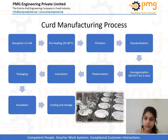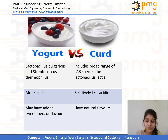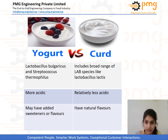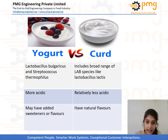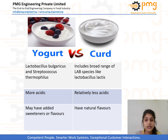Now let us understand the difference between curd and yogurt, two terms that are often confused. The processing steps for yogurt and curd are absolutely the same; the main difference lies in the starter culture used. Yogurt uses specifically Lactobacillus bulgaricus and Streptococcus thermophilus, whereas curd uses a broad range of LAB species like Lactobacillus lactis, Lactobacillus cremoris, and Leuconostoc species. The organisms used cause yogurt to be a bit more acidic than curd, and yogurt may have added sweetness whereas curd is made with natural flavors.